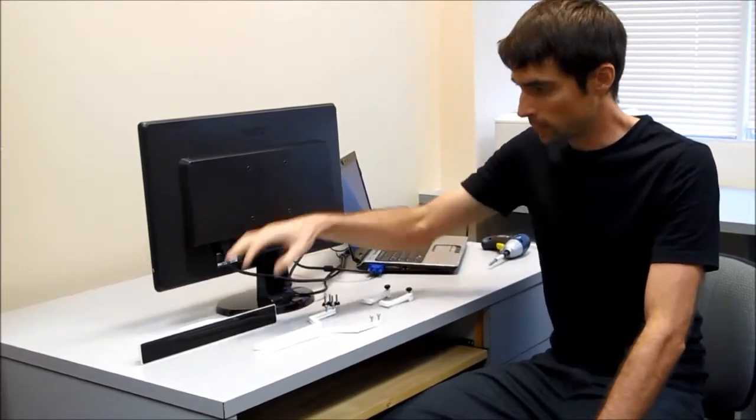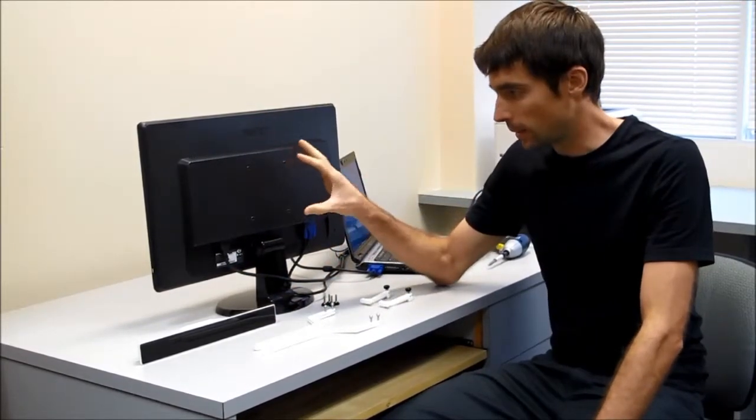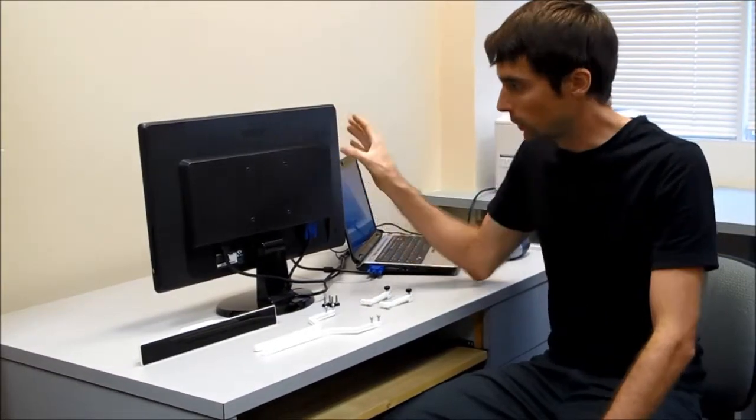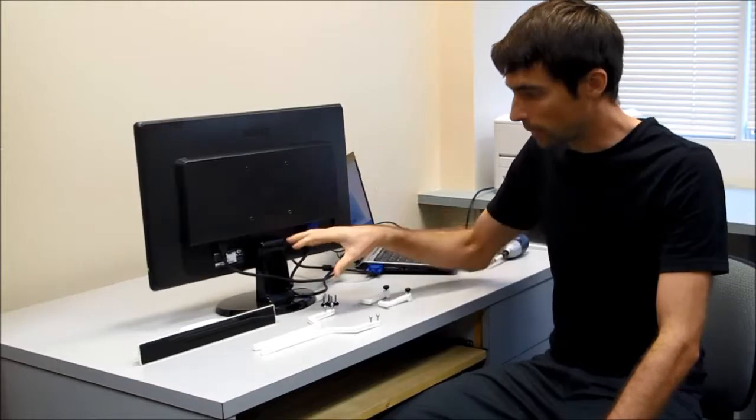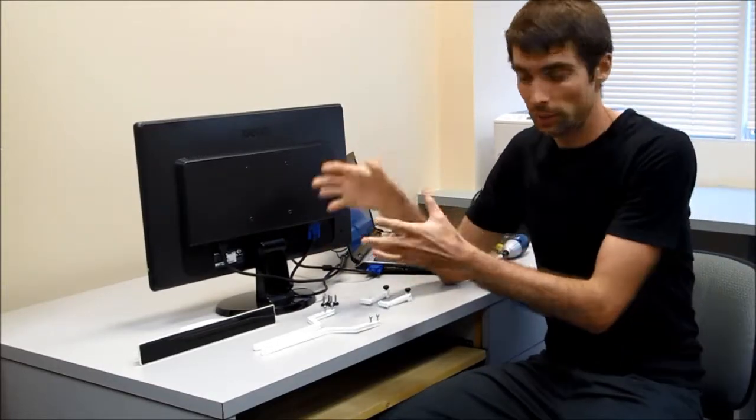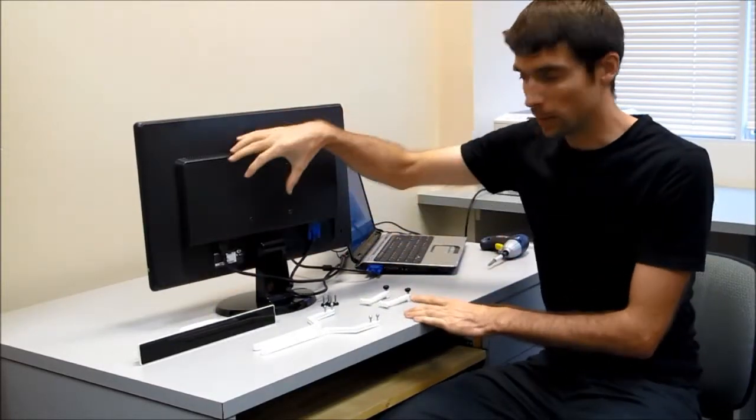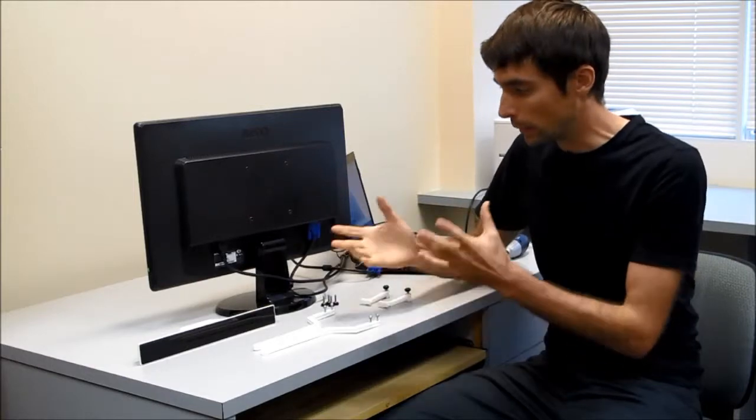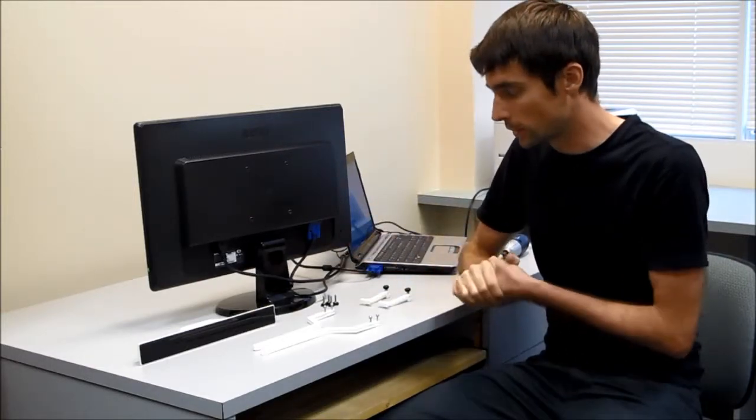This bracket mounts the GP3 to a display and really improves the performance of the system. When you bump the screen or anything, the calibrations stay fixed. The calibration is between the tracker and the display, so it really stabilizes the system over a floating tripod.